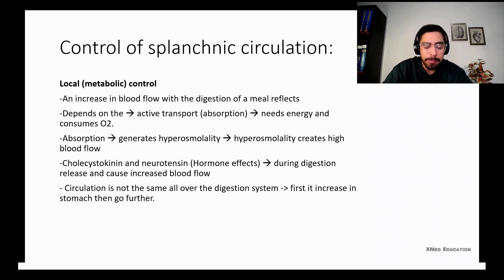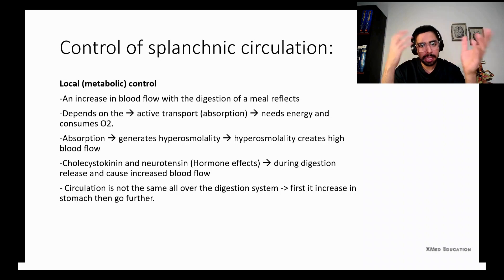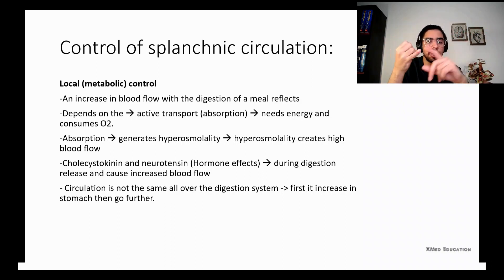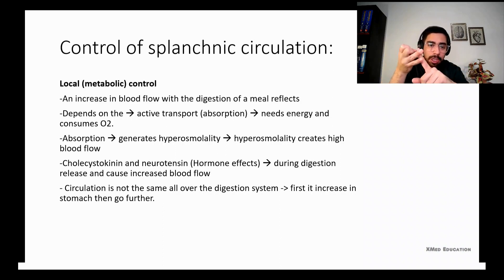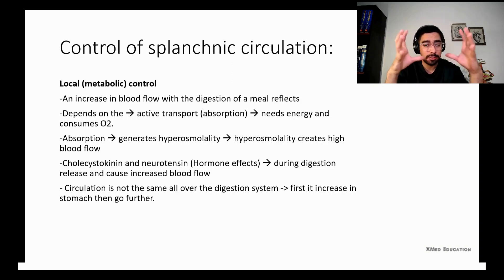The second factor is the hormonal effect. Inside the GI tract, certain cells release hormones to increase GI activity, absorption, and digestion. During digestion these hormones are released and can increase blood flow as well. Additionally, increased oxygen consumption raises carbon dioxide levels, and increased CO2 causes vasodilation, as we discussed in previous lectures.